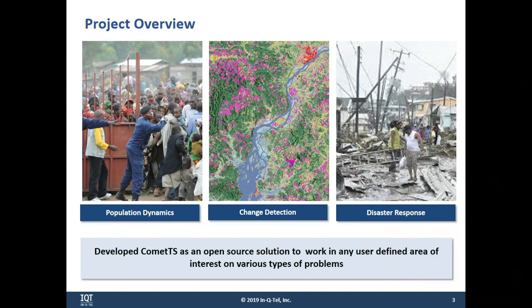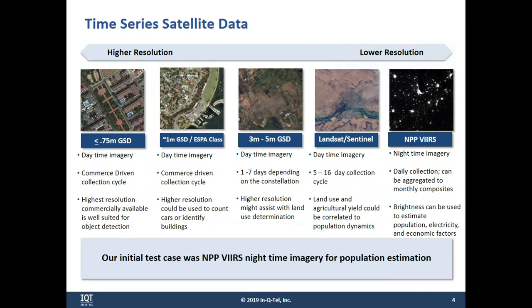Just as an overview, I'm going to be walking through a few case studies — specifically, we're going to be looking at population dynamics, change detection, and disaster response. It's really built to work on a lot of different problems. Comet is designed to work more with lower-resolution data that has consistent revisit rates and is consistently on the same look angles. You also want to have cloud masks and snow masks — all those things are really necessary for Comet to work well.